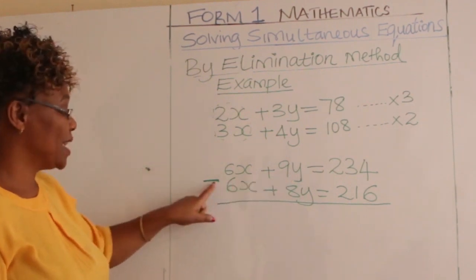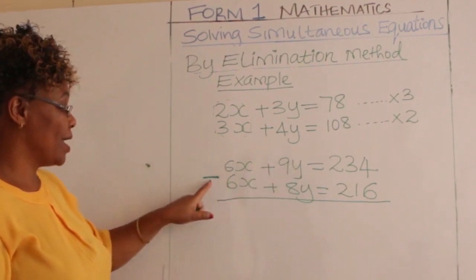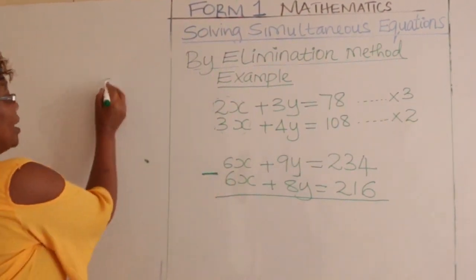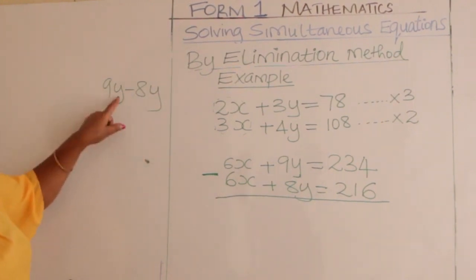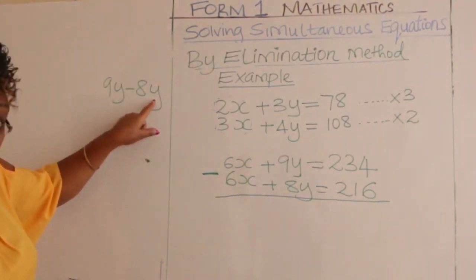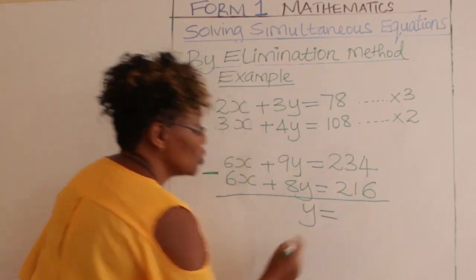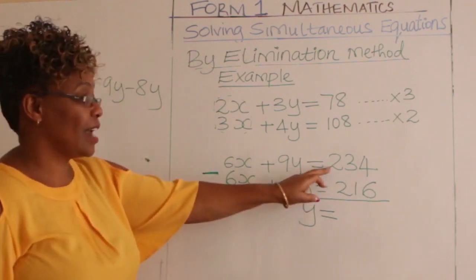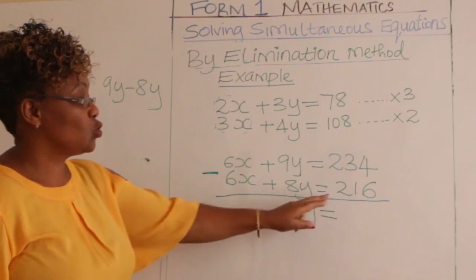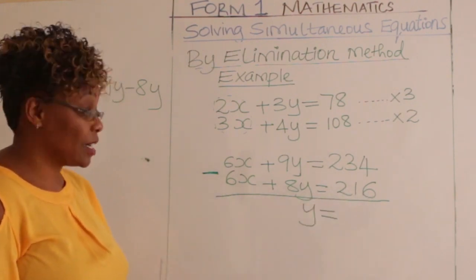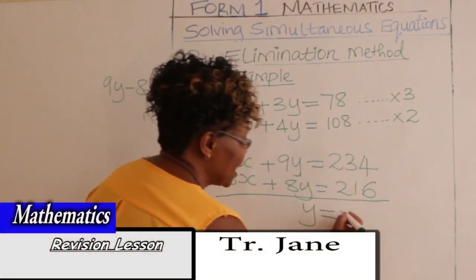9y minus 8y gives us 1y, so we are left with y. On the other side, 234 minus 216 equals 18. Therefore y equals 18.